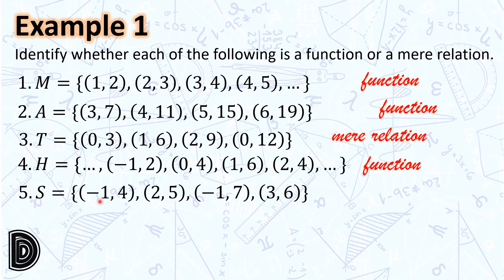Number 5: S is the set of ordered pairs (-1,4), (2,5), (-1,7), (3,6). Negative 1 as a value of x is related to more than one value of y — (-1,4) and (-1,7). This is not a function but a mere relation.